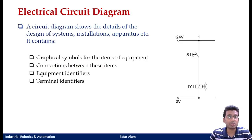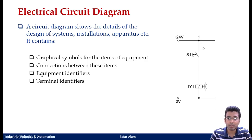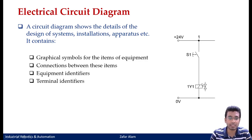Today in this lecture, we will be focusing first on your electrical diagram and then towards the end, we will see how to make both the pneumatic as well as electrical portion of a few examples of Electro-Pneumatic systems. To start with the electric circuit diagram — a circuit diagram shows the details of the design of systems, the installations and the apparatus. Basically it is a graphical representation of different items of the equipment. For example, this is a symbolic representation of a push button — a normally open push button. Similarly, this is a symbolic representation of your solenoid coil.